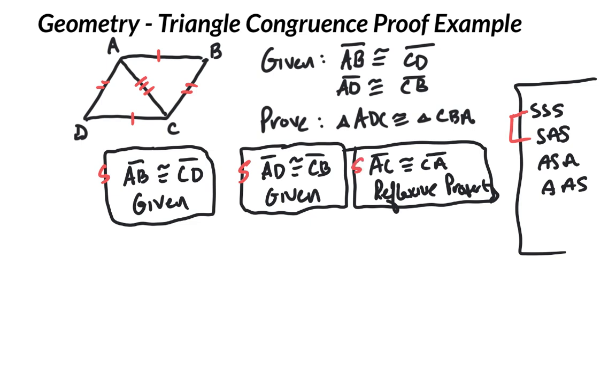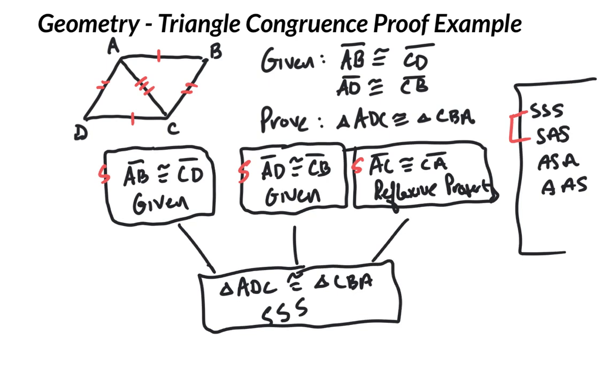So because of that we can say that these two triangles are congruent by side-side-side. And that's the way the flowchart proof of this would work.